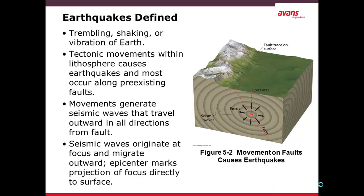These parts of an earthquake can be seen in the figure on the right-hand side. The larger red dot is the focus of the earthquake, or where the earthquake is happening. Along the fault, which is the red line, this tectonic movement causes seismic waves which radiate in three dimensions from the focus. Directly above the focus is the epicenter — the location on the earth's surface under which the earthquake has taken place.